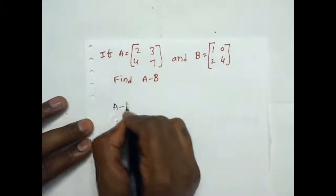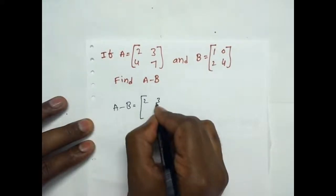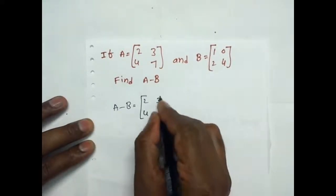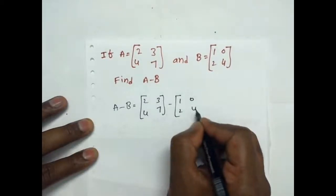Now A minus B is equal to, first angle is matrix A, 2, 3, 4, 7 minus matrix B is equal to, matrix B is equal to 1, 0, 2, 4.